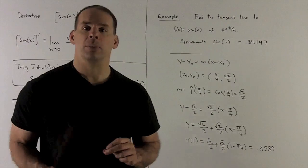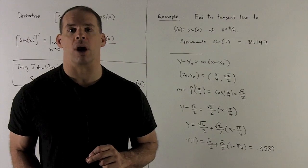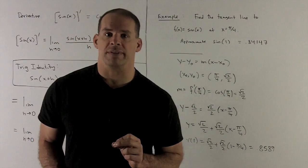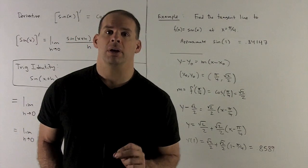Sine of 1 is going to be .8415 roughly. What do we need? I need to write down the equation of a line. We're going to need a point. We're going to need a slope.